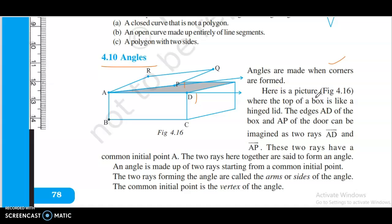Here is a picture, figure 4.16, where the top of a box is like a hinged lid. The edges AD of the box and AP of the door can be imagined as two rays.